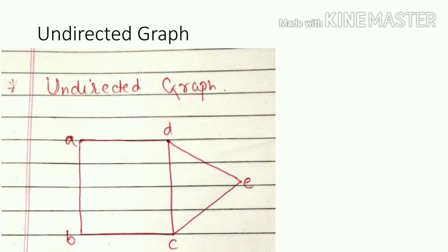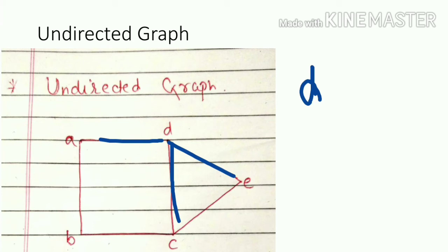For the degree of vertex D, you can see 1, 2, and 3 — meaning vertices A, E, and C are incident to D. So the degree of vertex D is 3. This is for the undirected graph.